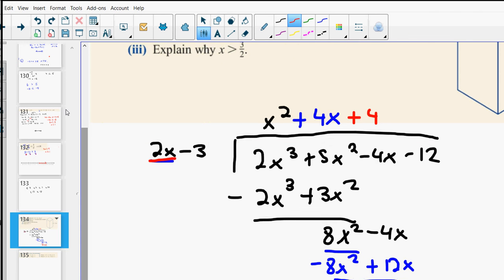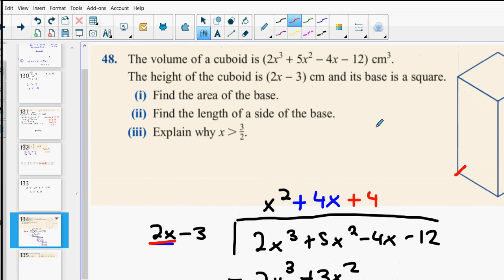Now, what we're essentially saying is that the area of the base. Everybody see the base? That is x squared plus 4x plus 4. Everybody cool with that? It's like the 25 from earlier. Okay. We divided the volume by the height. That gives us the area of the base.